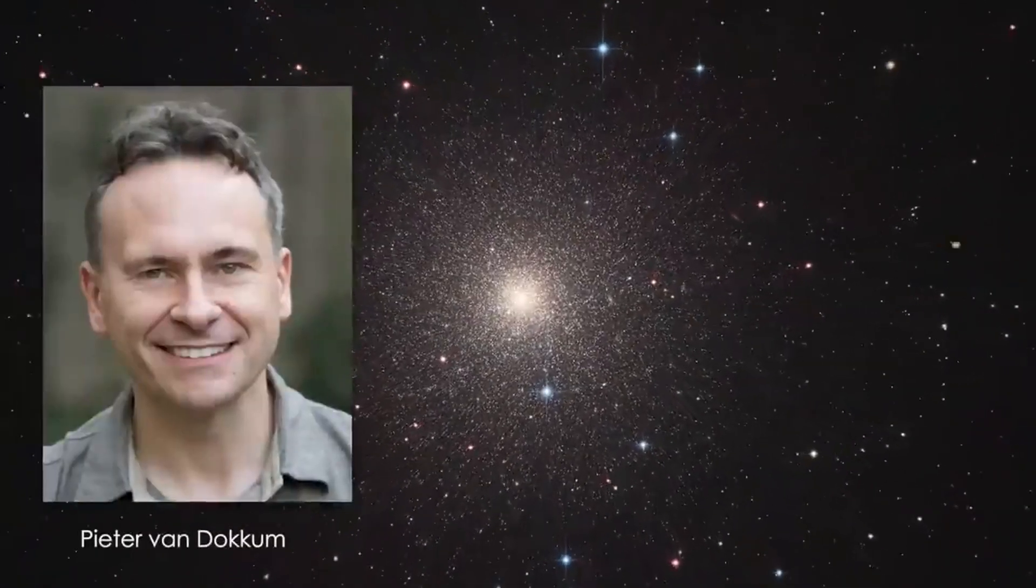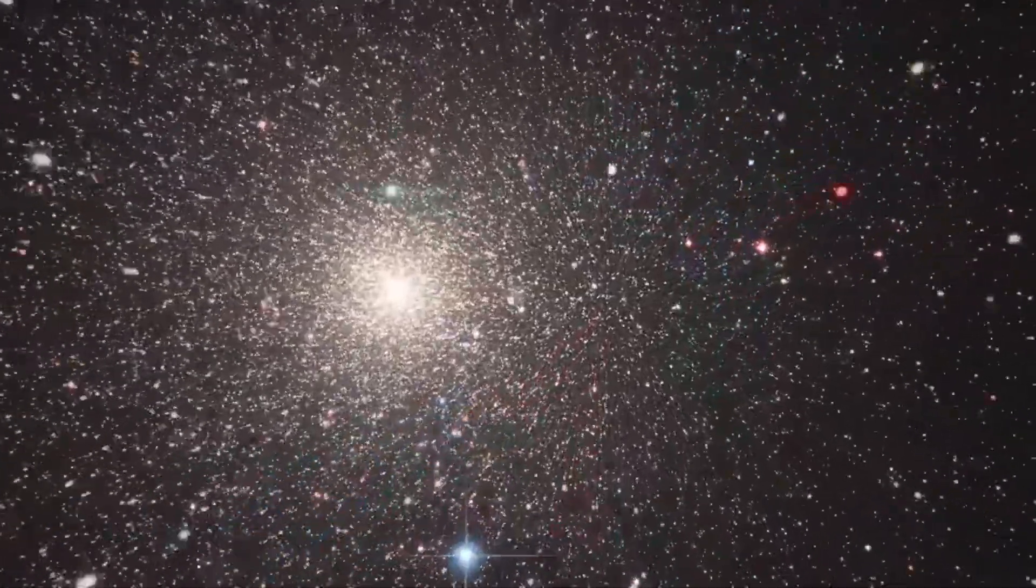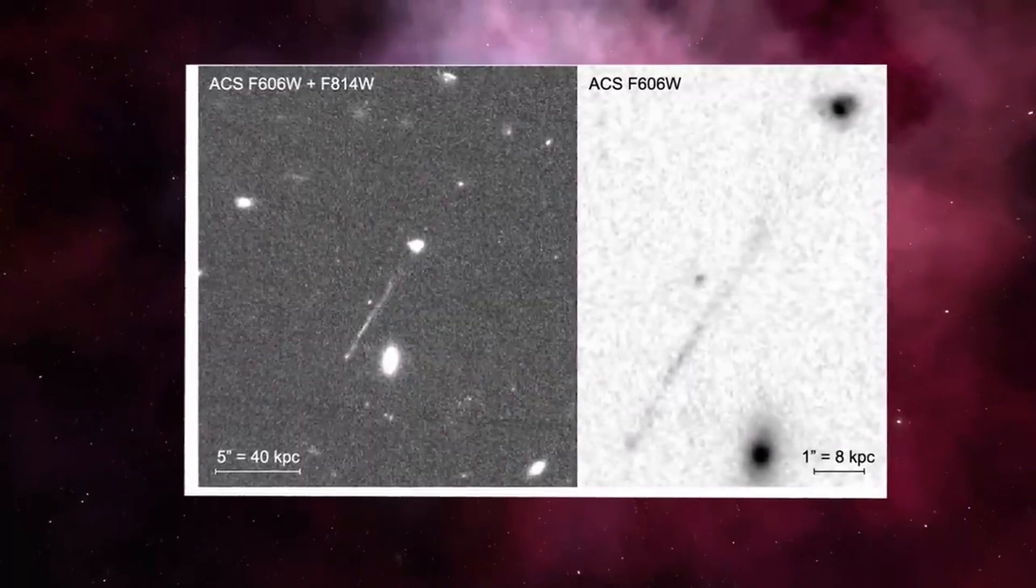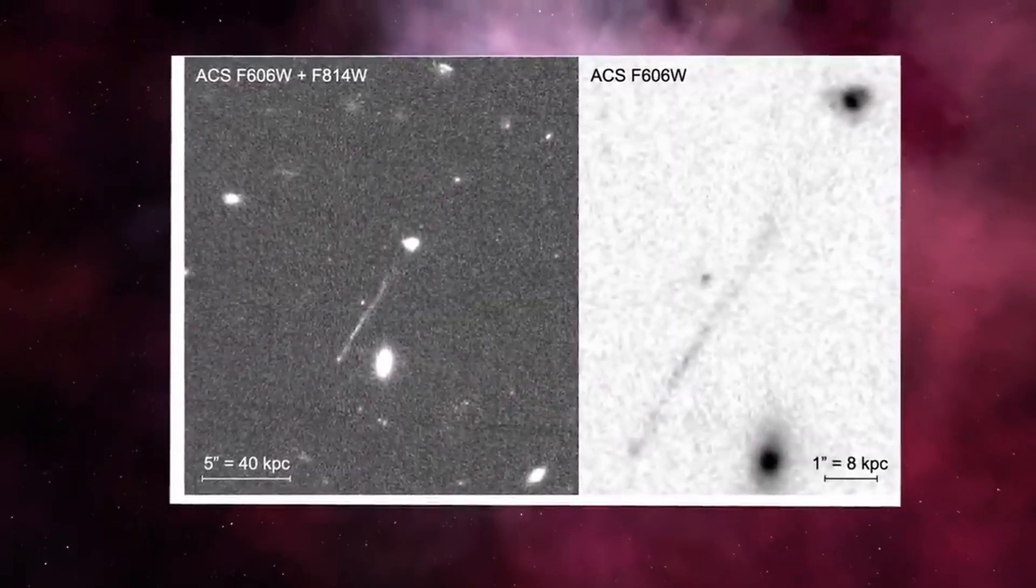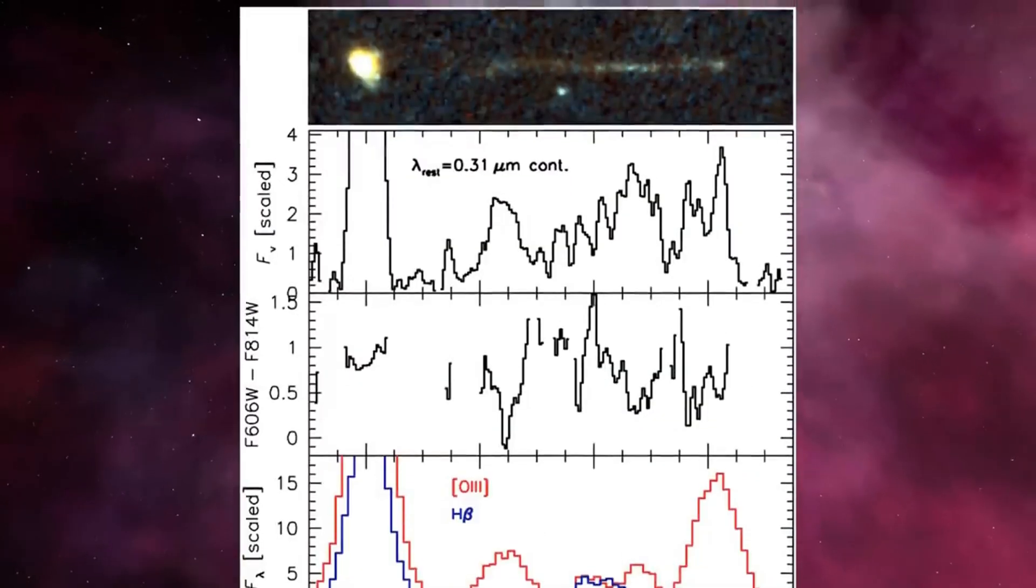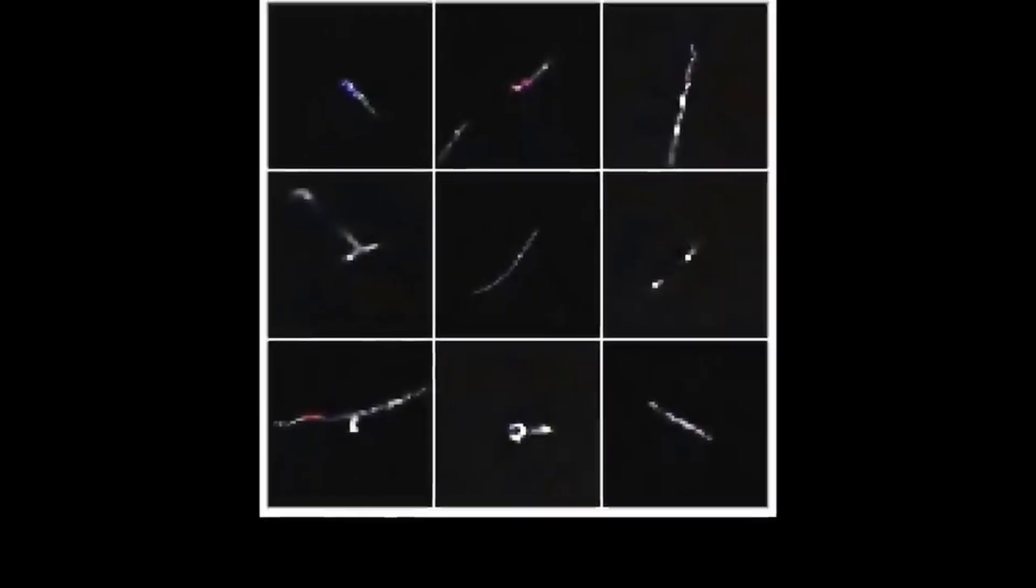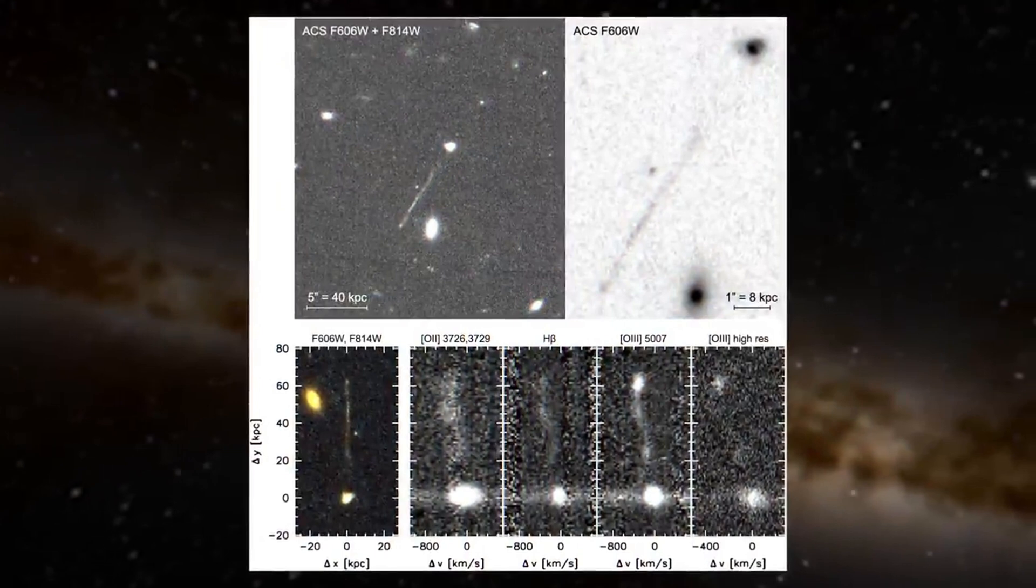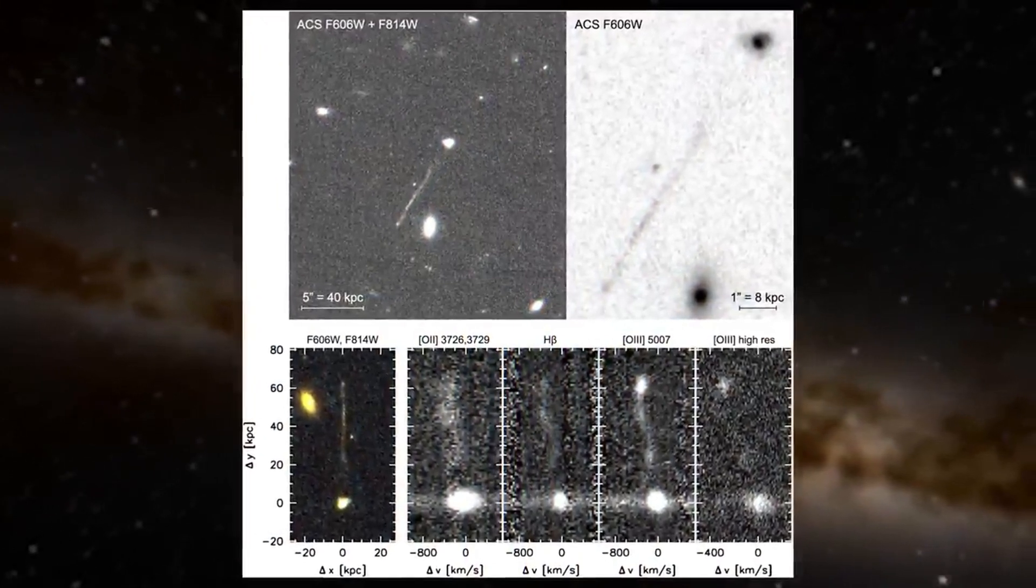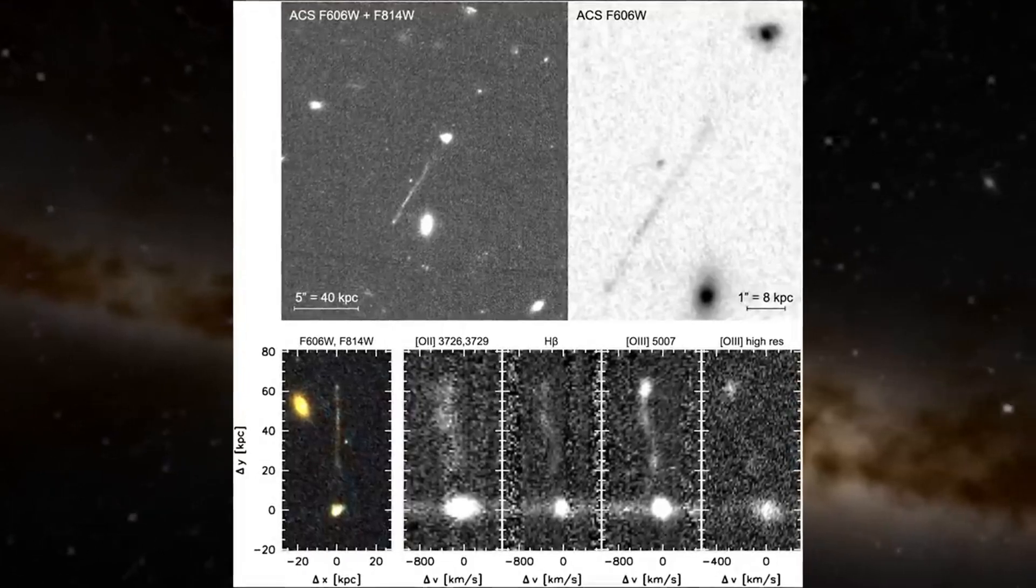Yale University astronomer Peter Van Dockum was looking for globular clusters of stars in a nearby dwarf galaxy in a Hubble image when he accidentally came across a strange streak of light that looked like a scratch. At first, he really thought it was a defect in the image, because cosmic rays hitting the Hubble camera's detectors do look like streaks of light or scratches.